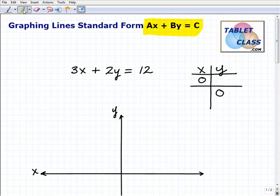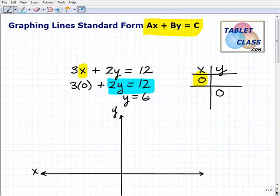So how do I do that? Well, I plug in the values. When x is 0, in other words I'm going to plug in 0 right here, what's y? So let's go ahead and do this. That's going to be 3 times 0 plus 2y equals 12. Of course, 3 times 0 is 0, so we just have to solve this equation right here, 2y equals 12. And when I solve that, I get y equals 6.